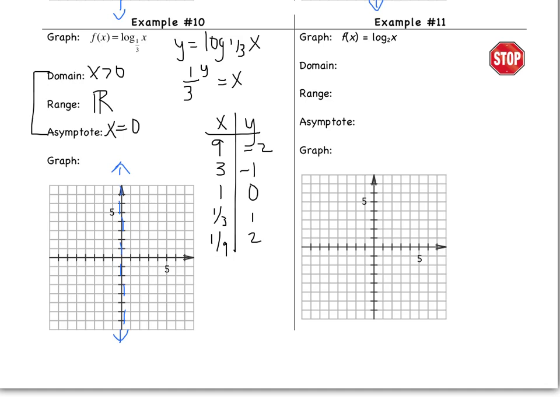And now I'm ready to graph. I always like to start with the middle point. So that's going to be 1, 0. I then have 1 third, 1. 1 ninth, 2. Again, these are not perfect but what you need to know is 1 ninth is going to be really, really close to the y axis, closer than 1 third. I then have 3, negative 1 and 9, negative 2 which is going to go off our graph a little bit. And now I'm ready to connect my points.